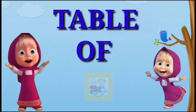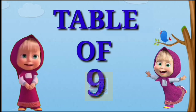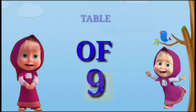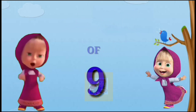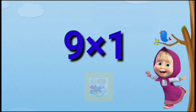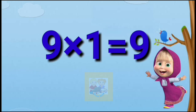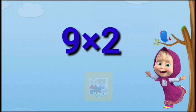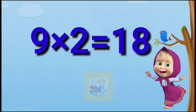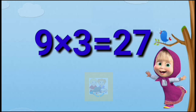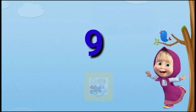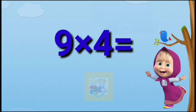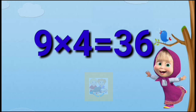Table of nine. Nine ones are nine. Nine twos are eighteen. Nine threes are twenty-seven. Nine fours are thirty-six.